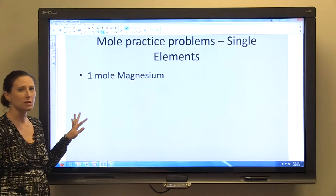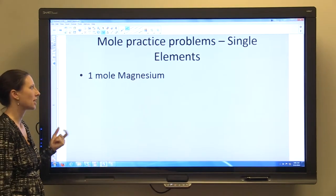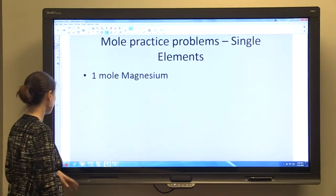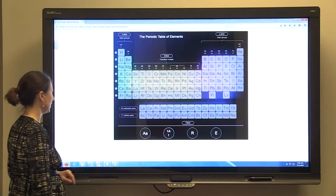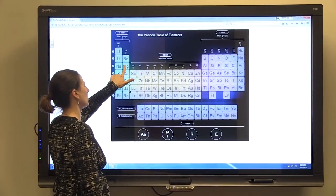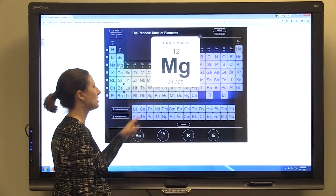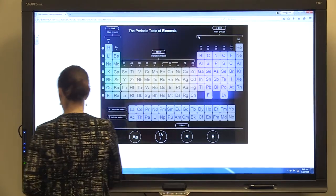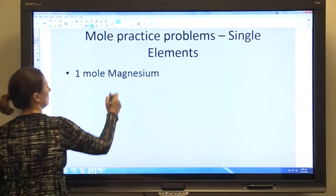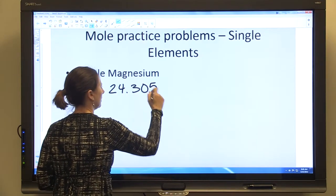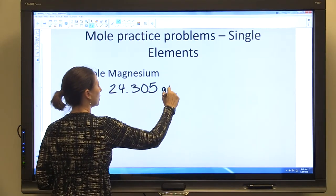All of these problems we're going to do are talking about the weight, so we're going to determine the weight of one mole of magnesium. In order to do that we need to know the atomic weight of magnesium, so we go to our periodic table and find magnesium and the atomic weight is 24.305. So 24.305 and that is grams per mole.